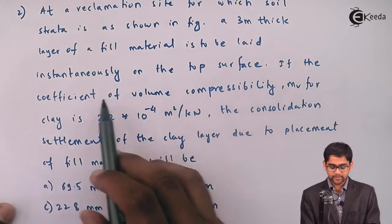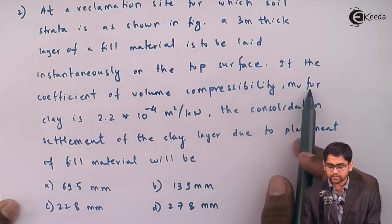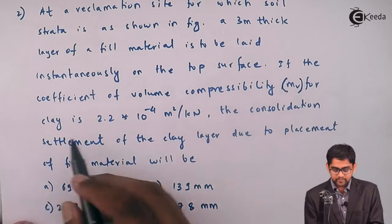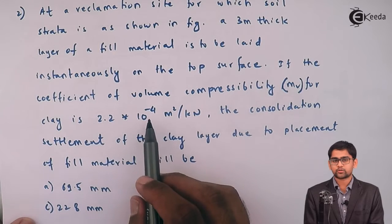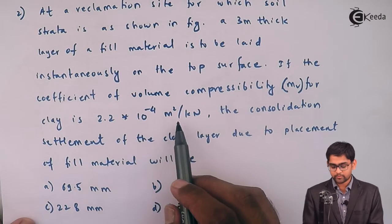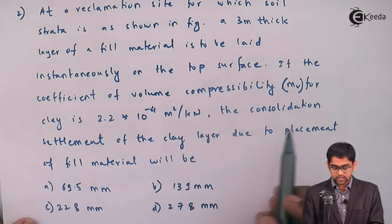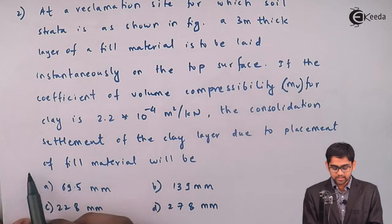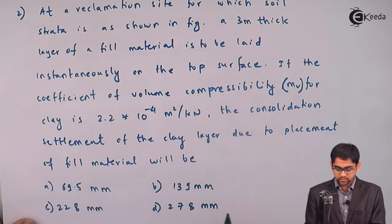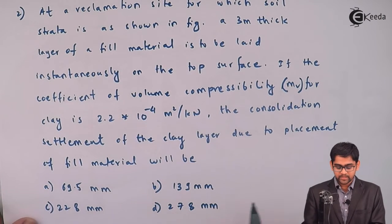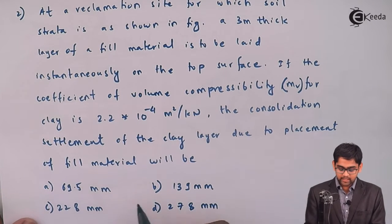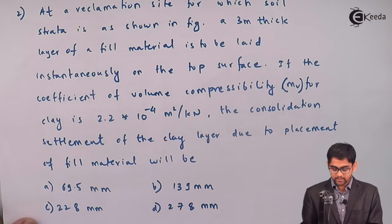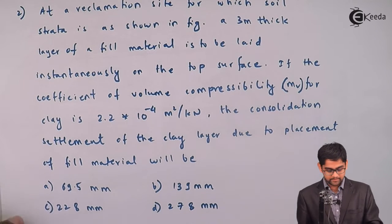If the coefficient of volume compressibility, that is MV, for the clay is 2.2×10⁻⁴ m² per kN, then the consolidation settlement of the clay layer due to the placement of fill material will be — and the options given are 69.5, 139, 228, and 278 mm.